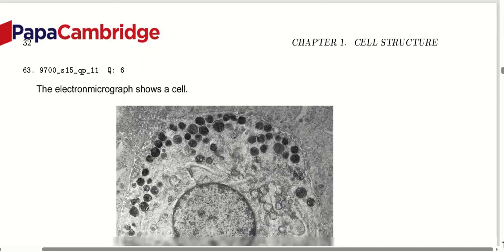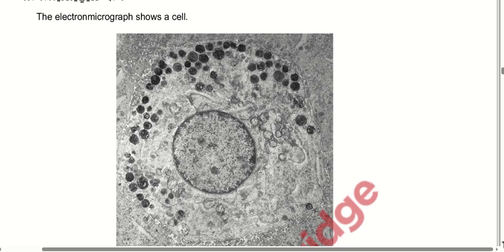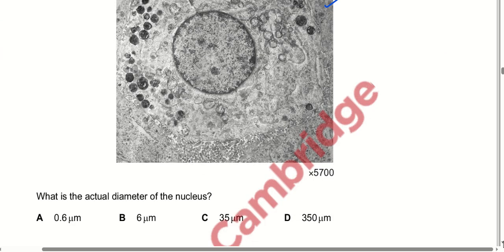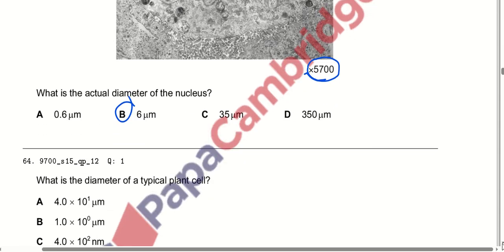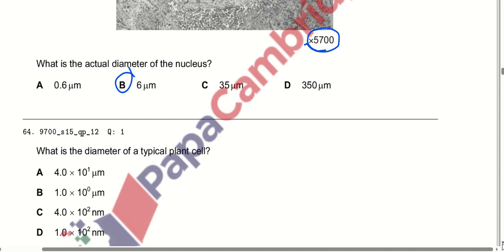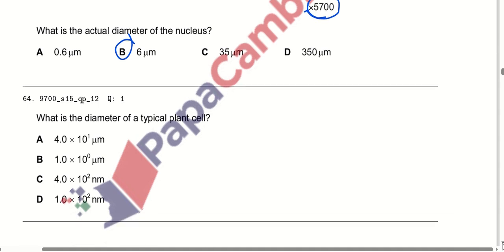The electron micrograph shows a cell at a magnification giving 700× the original size. What is the diameter of a typical plant cell? We need to recall this value. It comes out to be 4 × 10 to the power 1 micrometres. Option 8 is the correct one here.